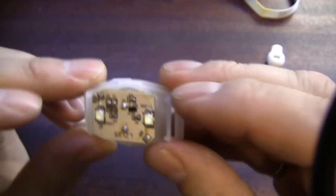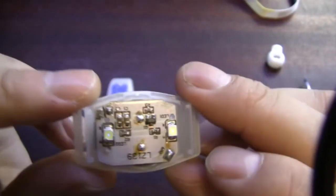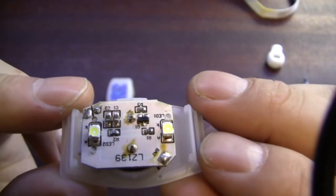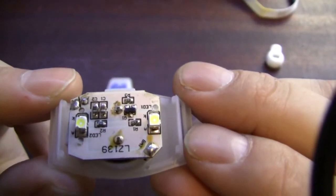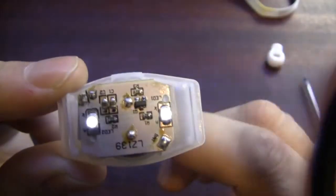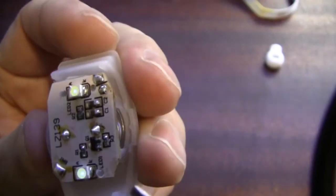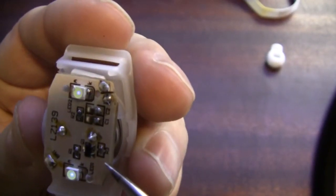Okay, so there's the small little circuit board. Wow, there's really not much to it. So as we thought, there's a few high brightness LEDs there, a few resistors.